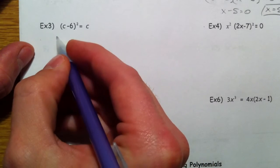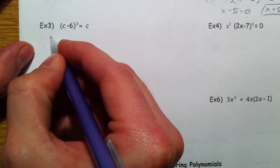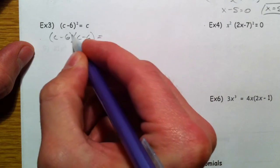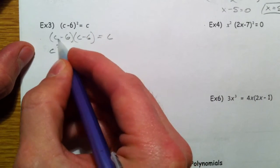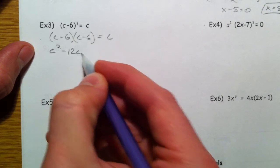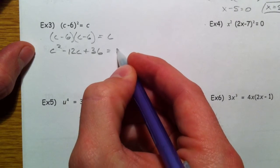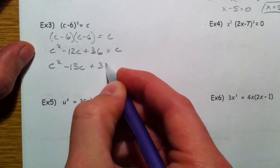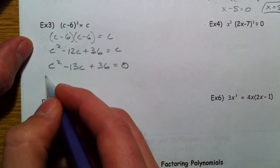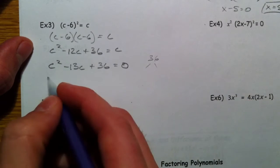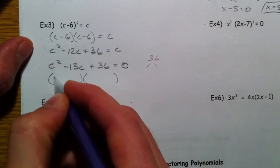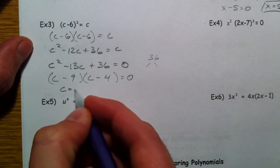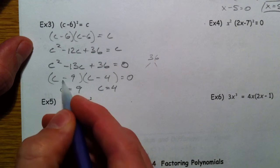Alright, so c minus 6 squared equals c, so you have to subtract the c out. I'm going to multiply c minus 6 squared, so that's c minus 6 times c minus 6. Do not distribute that squared. So you get c squared minus 6c minus 6c inside-outside. Add the 36, and you get c. So let's subtract that other c to get negative 13c plus 36 equals 0. So what multiplies to 36 and adds to negative 13, negative 4 and negative 9. So c equals 9 and c equals 4.